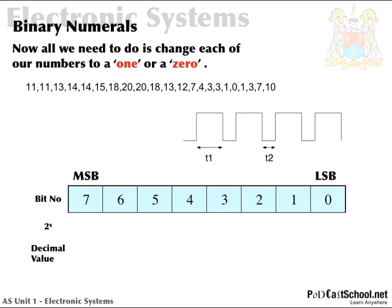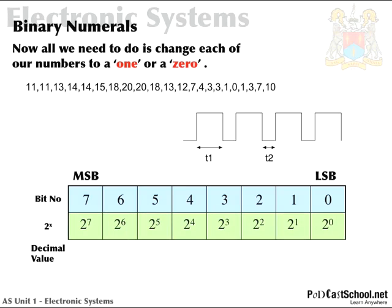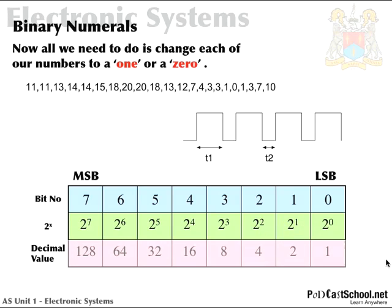Next, we're going to put in another row where we take two to the power of the bit number — so two to the power of zero, two to the power of one, two to the power of two, and so on — which would give us decimal values of one, two, four, eight, sixteen, thirty-two, sixty-four, and one hundred and twenty-eight.